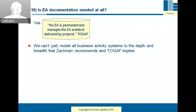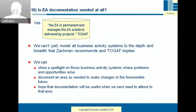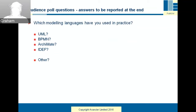Is EA documentation needed at all? Certainly TOGAF thinks so. We can't yet model all the business systems to the depth and breadth that Zachman recommends and TOGAF implies. We can shine a spotlight on where problems and opportunities arise, document what we need for now, and hope that documentation will be useful next time we revisit the area. There's also a poll question: which modeling languages have you used in practice? UML, Business Process Modeling Notation, Archimate, IDEF — all international standards — or perhaps some other.